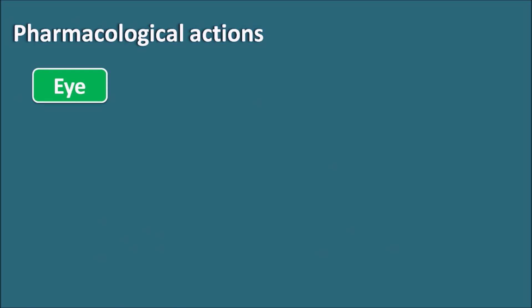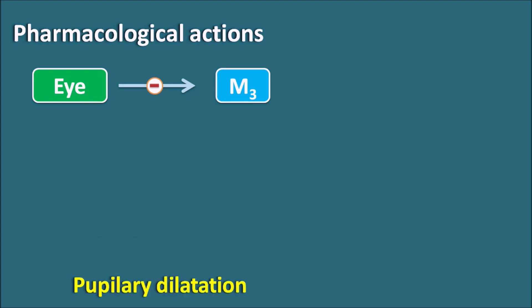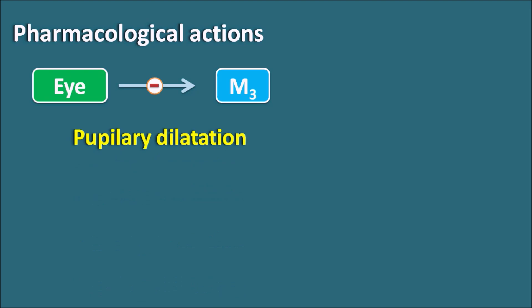Second — the eye. The smooth muscles of the eye are equipped with M3 receptors. Anticholinergics block these M3 receptors, which are excitatory and responsible for pupillary constriction. Since anticholinergics block M3 receptors, they produce pupillary dilatation — that is why these drugs produce mydriasis. Cyclopentolate and tropicamide are particularly used as mydriatics.